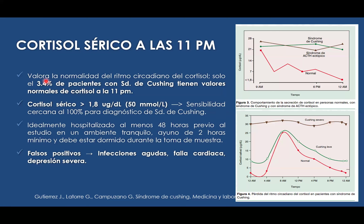El valor normal del ciclo circadiano del cortisol sérico a las 11 de la noche: solo en el 3.4% de pacientes los valores normales de Cushing lo vamos a encontrar. Un cortisol sérico mayor de 1.8 microgramos — o mayor de 10 microgramos por decilitro — nos da casi cerca del 100% del diagnóstico de síndrome de Cushing.